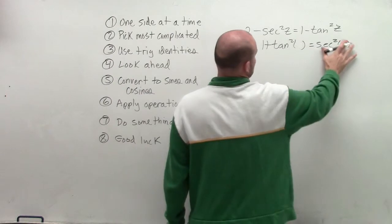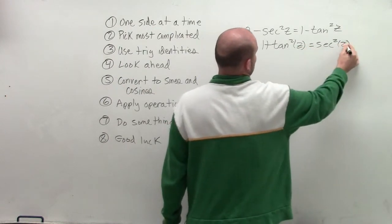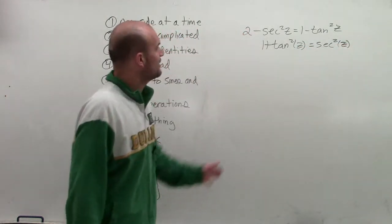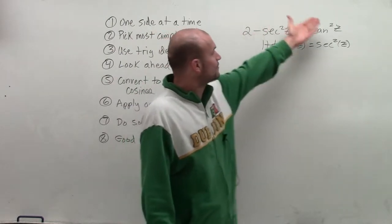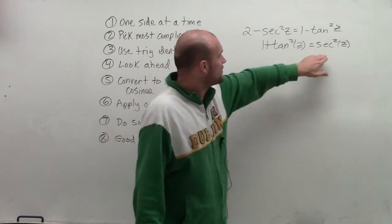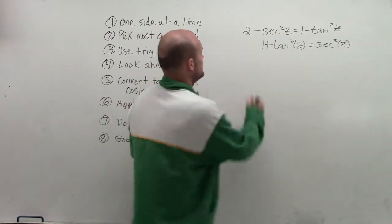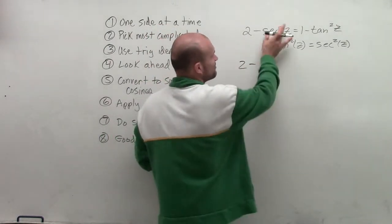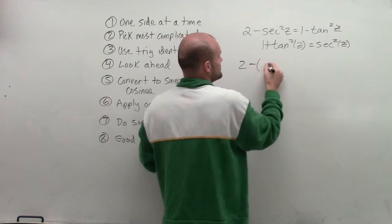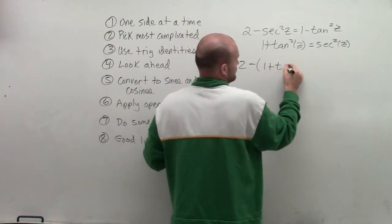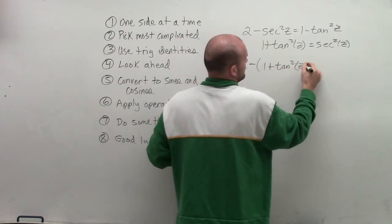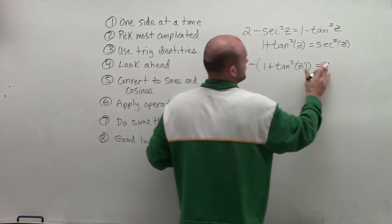Well, we're not dealing with x's, we're dealing with z's, so I'll put a z in there. So what I want to do is on my left side, I want to rewrite it as tangents. Therefore, I know that secant squared of z is equal to 1 plus tangent squared of z. So what I'm going to do is I'm now going to replace my secant in for tangent.